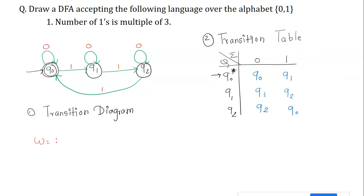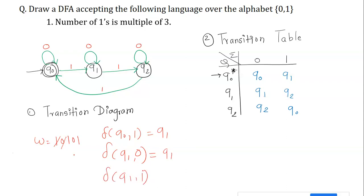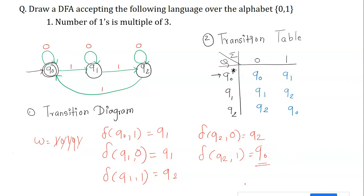Let's process the string w = 101011, which has three ones — a multiple of three. Starting at q0: read 1 → q1; read 0 → q1; read 1 → q2; read 0 → q2; read 1 → q0; read 1 — wait, the string is 101011, so: q0→q1→q1→q2→q2→q0→q0. The string ends at q0, which is the final state, so the string is accepted.